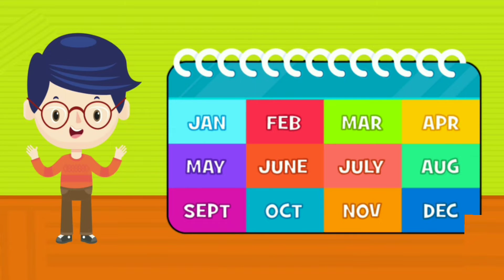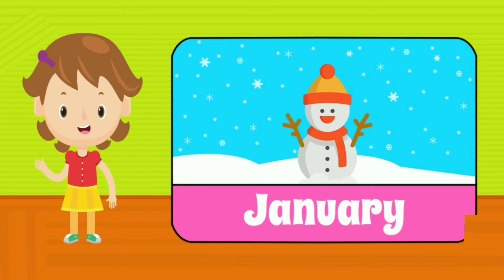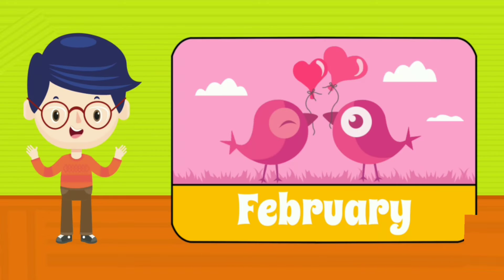There are 12 months in a year. January is a month of snow falling. February is a month of love.